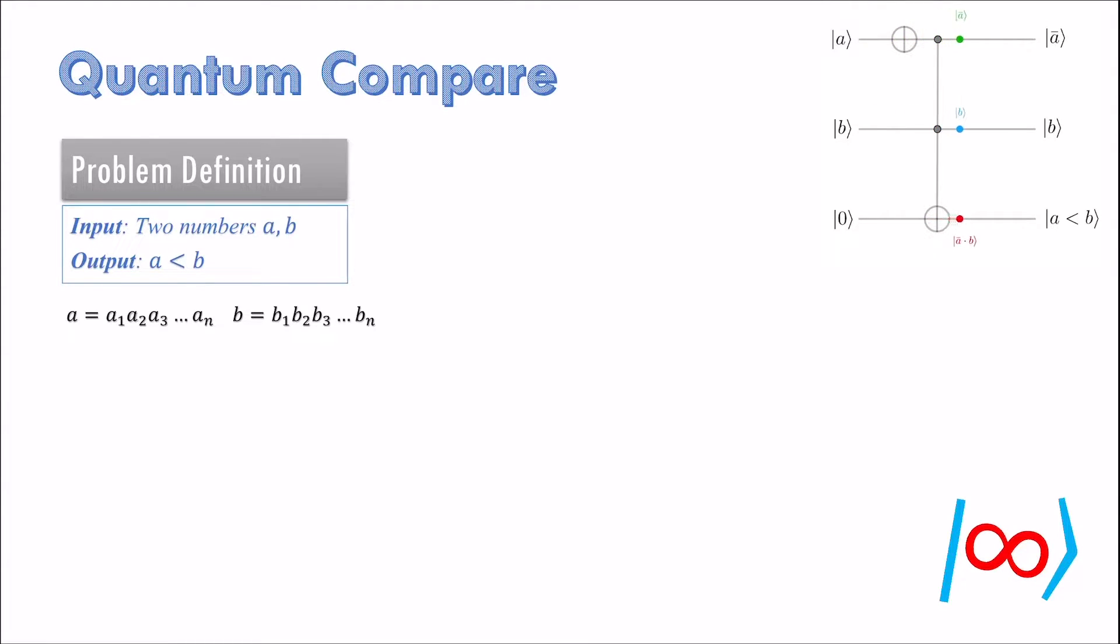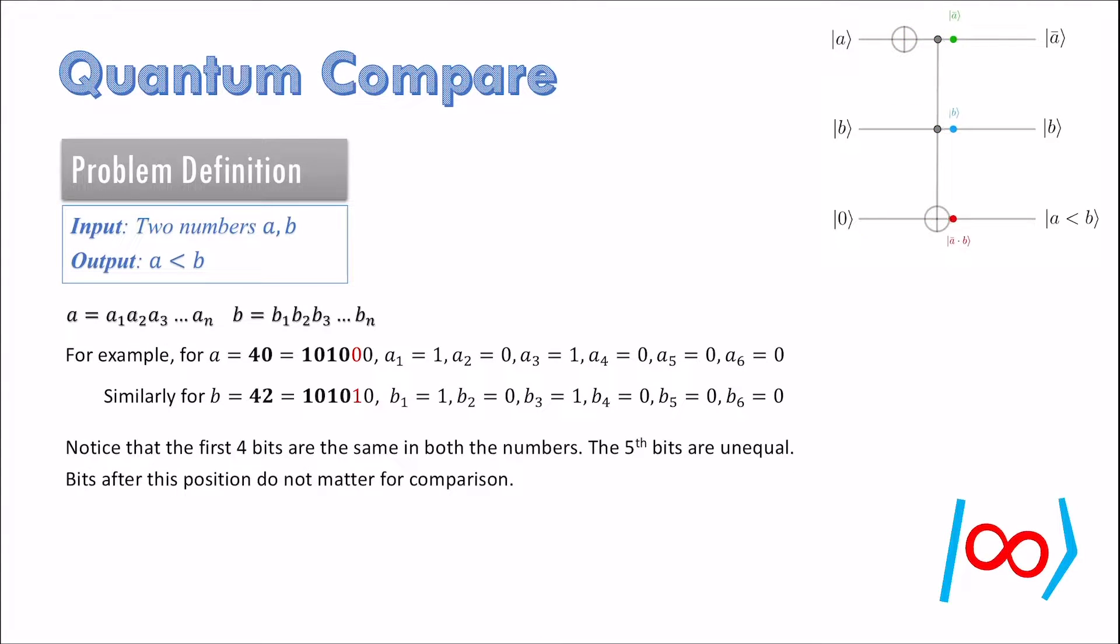Consider the following example. Notice that the first 4 bits are the same in both numbers. The 5th bits are unequal. Bits after this position do not matter for comparison. This suggests the following expression that evaluates to the comparison of a and b.